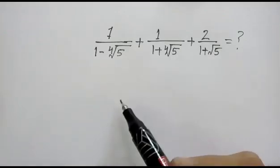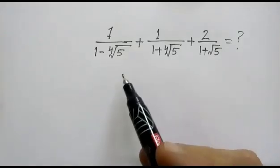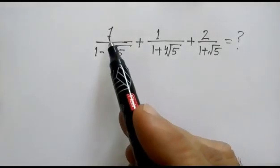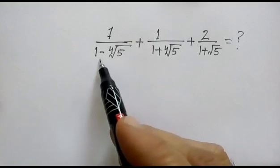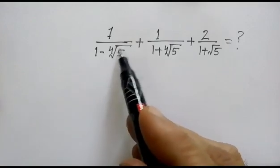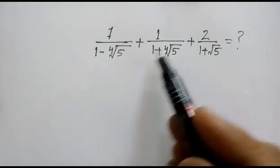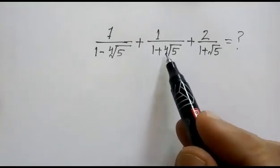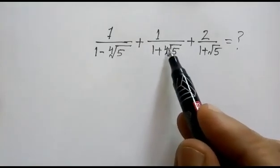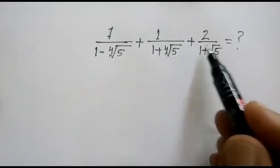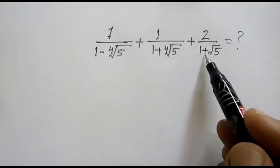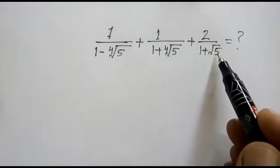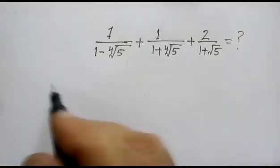Hi friends, we have to calculate this nice problem: 1 over 1 minus 4th root of 5, plus 1 over 1 plus 4th root of 5, plus 2 over 1 plus square root of 5.